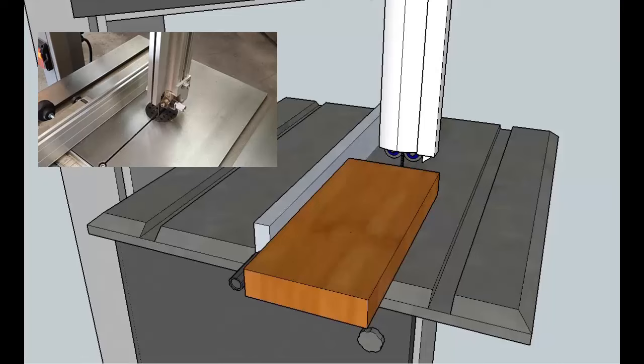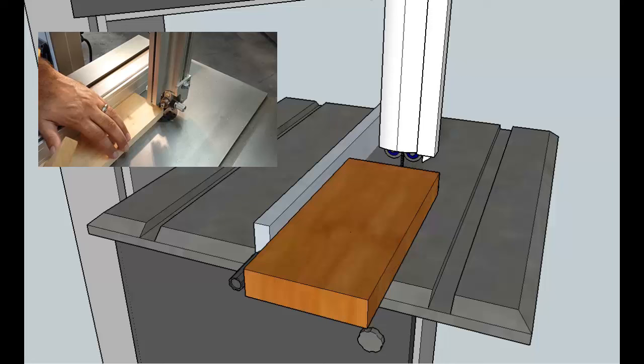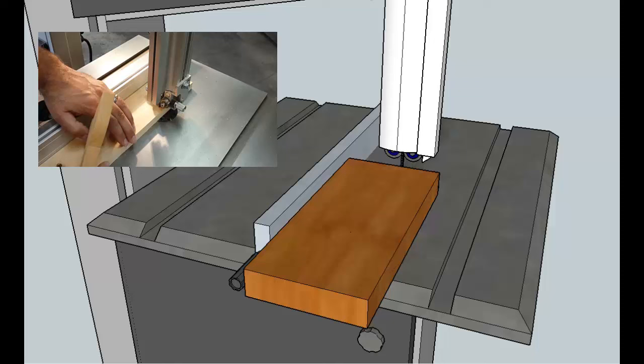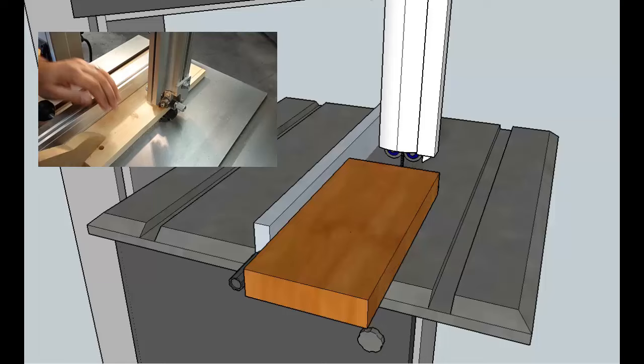This one here has a fence applied to the table. This would be used for ripping a piece of wood. You have to be careful using a fence with a bandsaw because bandsaw blades tend to track to the left or right, and you have to align the fence with the tracking of the blade, so it's not like a table saw.